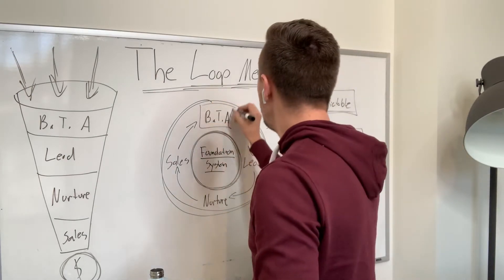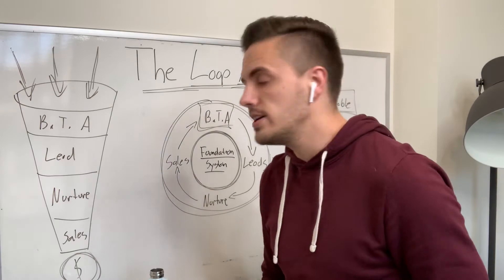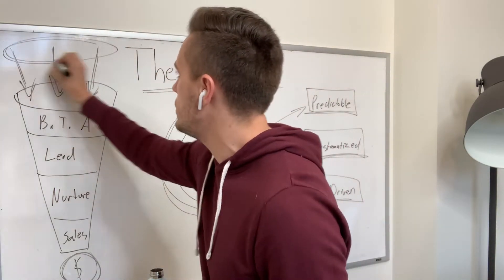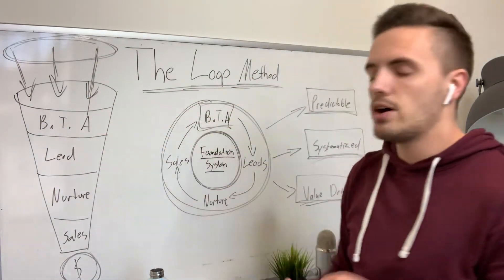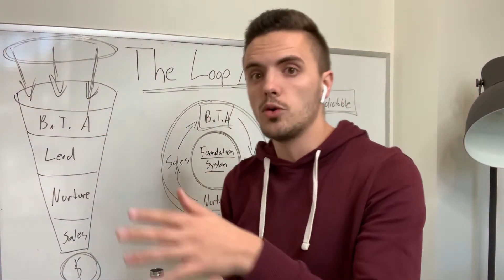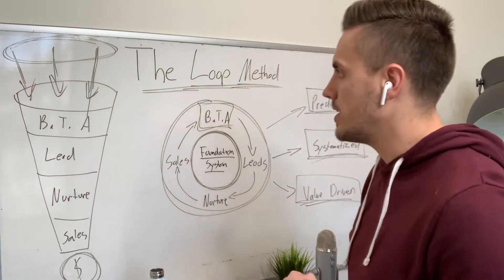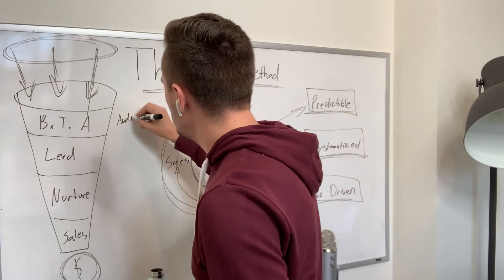So the first step to the loop method is building a targeted audience or BTA is the acronym. The first thing is how do we get cold audience people who are not in our audience to become a part of our audience. Now, of course, we want them to be targeted, we want them to be the right type of people in our audience. So that's why we call it the targeted audience. So this is what we call an audience growth system.